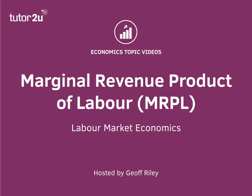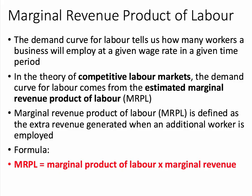As part of our study of the labour market, we're going to take a few minutes to think about the concept of Marginal Revenue Product of Labour, or MRPL. We use MRPL when we're deriving the demand curve for labour in the labour market. The demand curve for labour tells us how many people a business is willing and able to employ at a given wage rate in a given time period. And in the theory of a perfectly competitive labour market, the demand curve for labour is taken from the estimated Marginal Revenue Product of Labour.